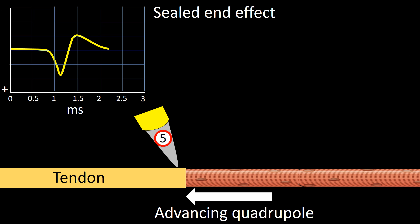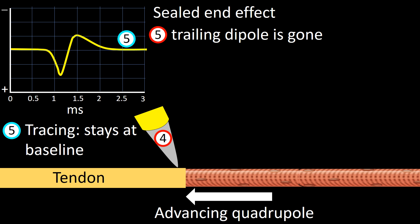Stage 5 is characterized by the disappearance of the trailing dipole. In the display panel, the tracing runs at baseline.